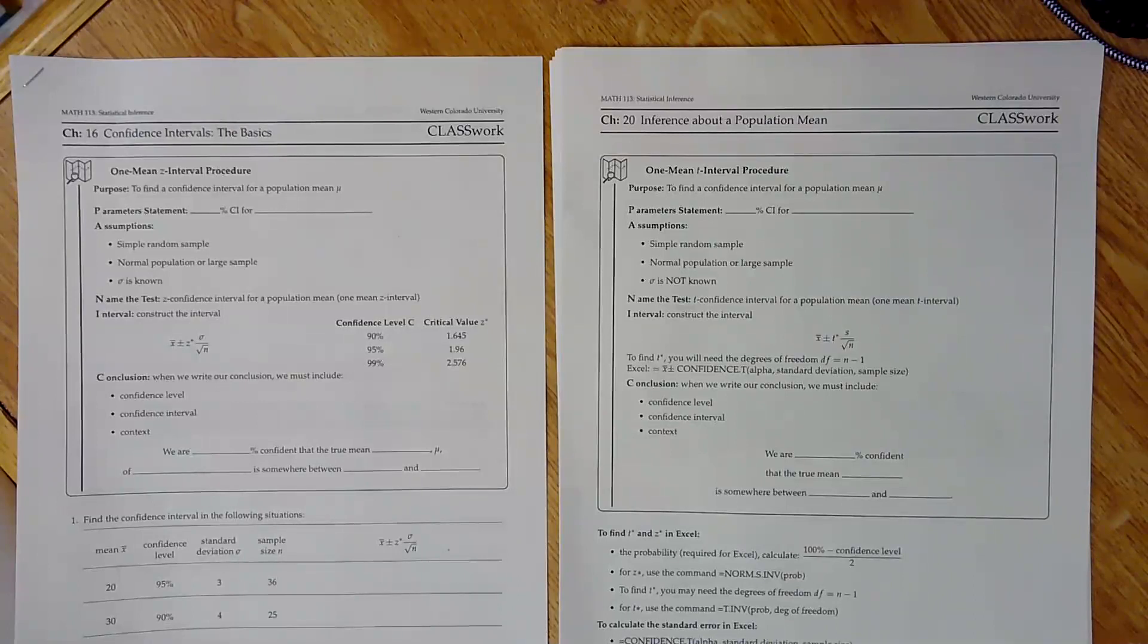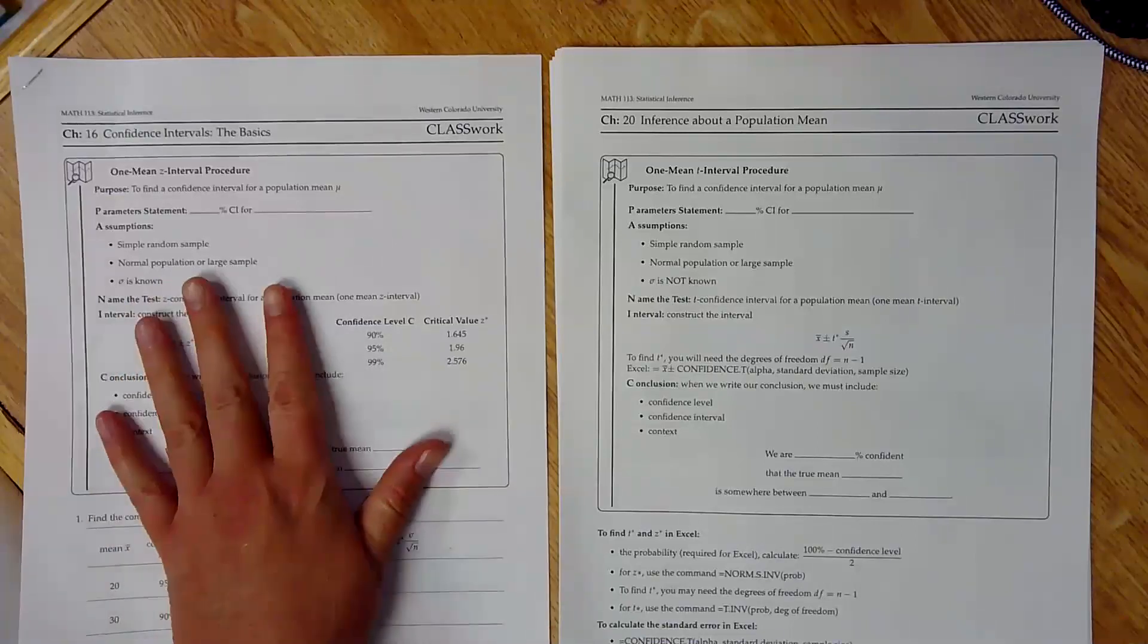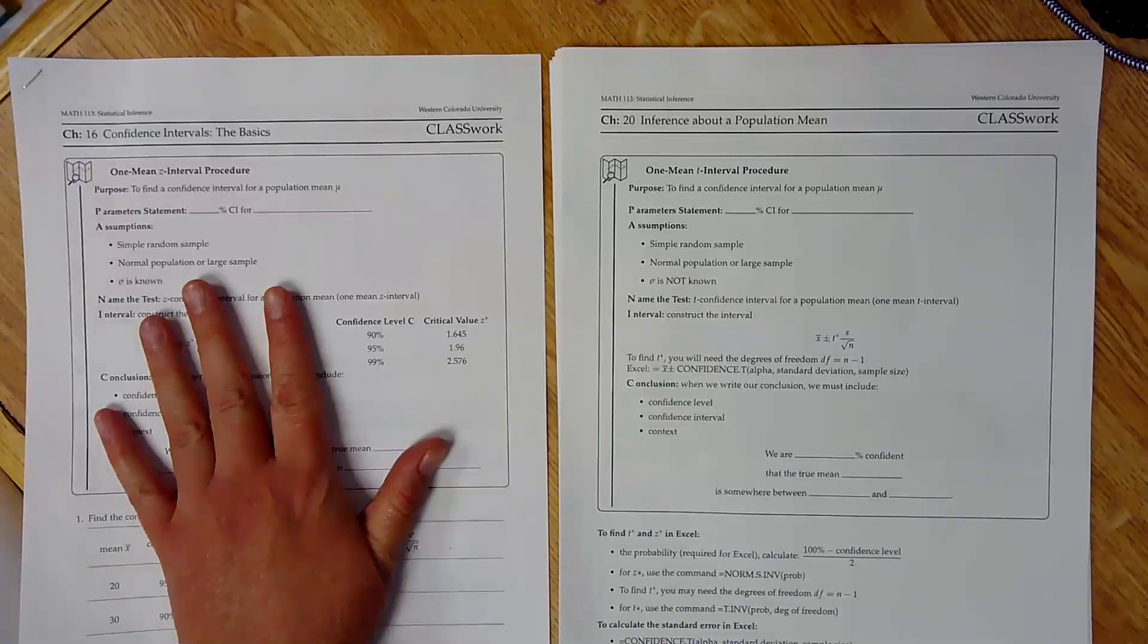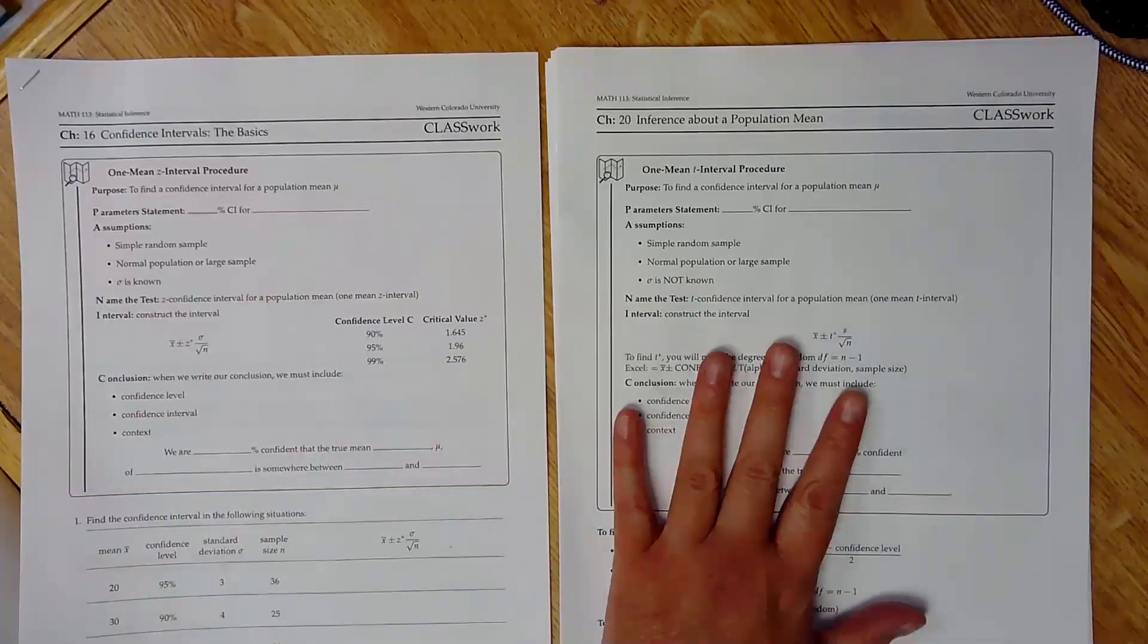Okay, and so that's going to change the probability a little bit when we look at things. And so I want to go through the difference between a one-mean-z as in zebra interval and a one-mean-t as in tiger interval. Okay, so this one from chapter 16 is the one that you have already learned. And now we're going to learn this for a t interval.